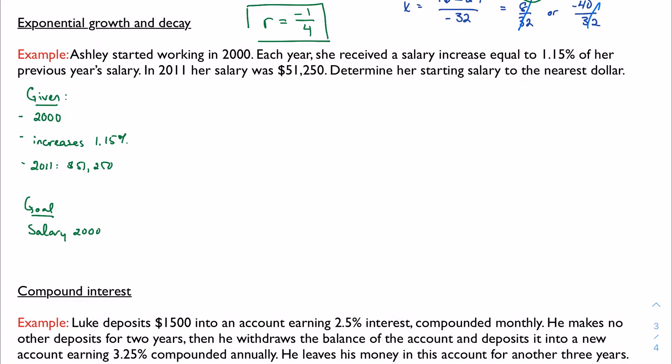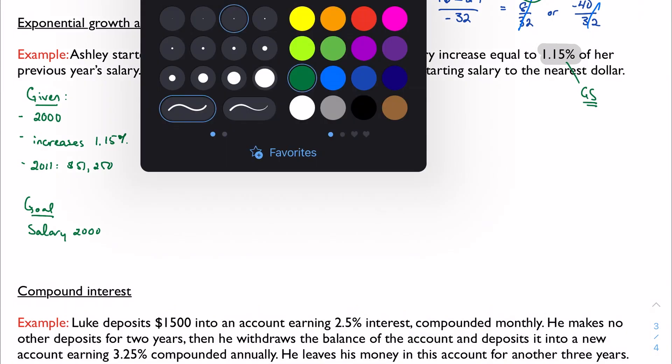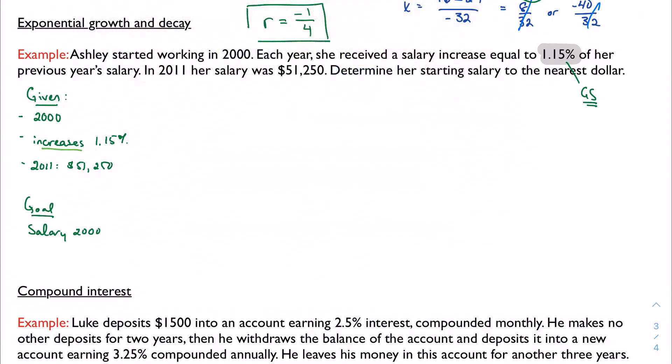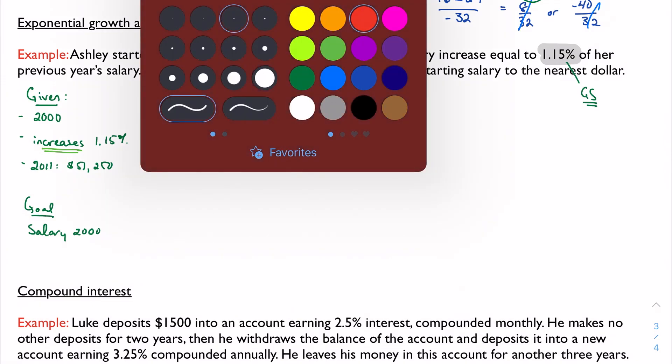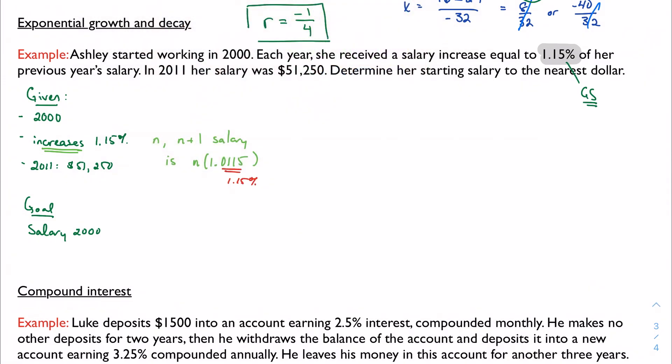Well, when we see this percent increase, then we know we're talking about a geometric series, or sequence rather. And because it's increasing 1.15%, then I could say that for year N, the N plus 1, the next year's salary, is the salary for year N times 1.0115. This is the 1.15%, 1 plus that percent, because my salary is growing. We call it exponential growth.